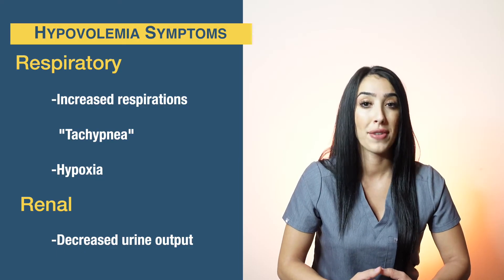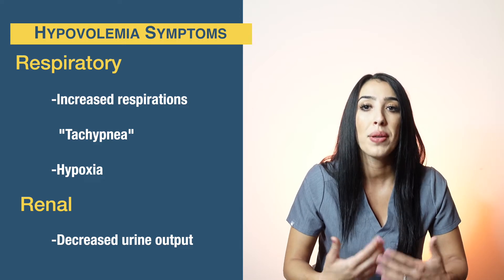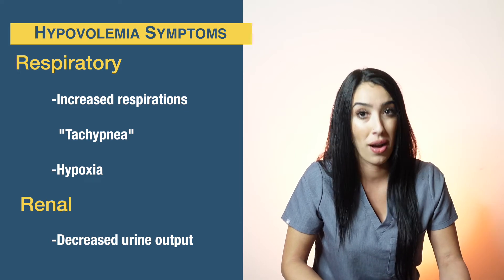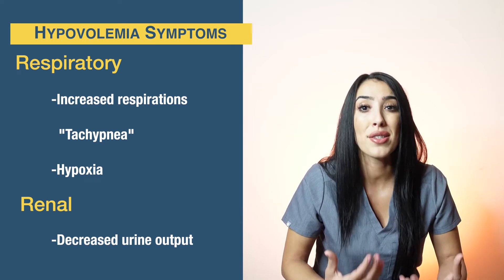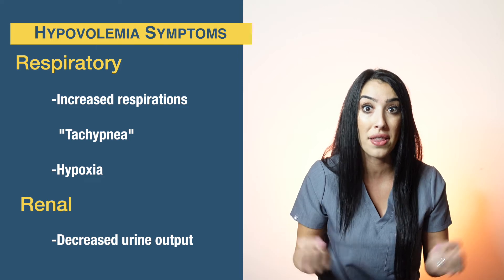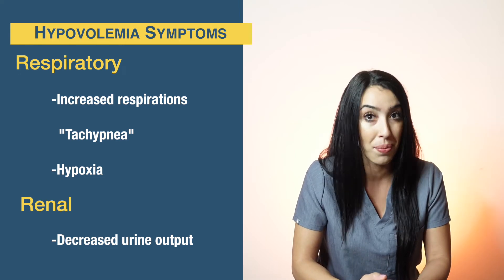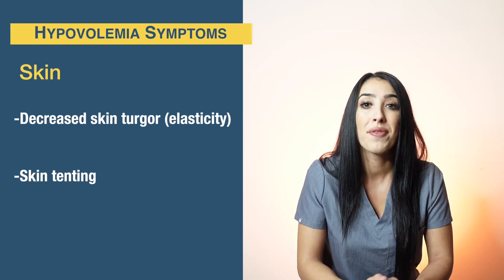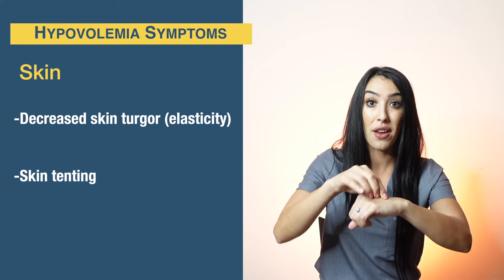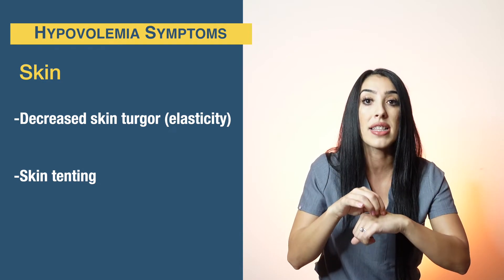Respiratory clinical manifestations with hypovolemia include increased respirations, also known as tachypnea, which helps the body try to compensate for having a low amount of fluids. That can then lead to hypoxia. Renally, there is decreased urine output because the kidneys don't have enough fluids to push out, or they try to hold back that fluid when they sense the body is in distress. Regarding skin, these patients will have decreased skin turgor — we pull up the skin on the hand to see if there is tenting; if there is tenting, the patient is dehydrated.